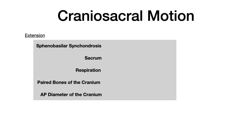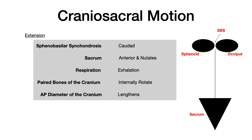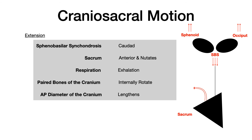Now let's talk about craniosacral extension — the movements are opposite. In craniosacral extension, the SBS moves caudad, the sacrum moves anterior and is said to nutate, this occurs during exhalation, the paired bones internally rotate, and the AP diameter lengthens. So starting from a normal position, during craniosacral extension the SBS moves caudad, the sphenoid and occiput extend, and the sacrum nutates anteriorly. The paired bones internally rotate, lengthening the AP diameter of the cranium.